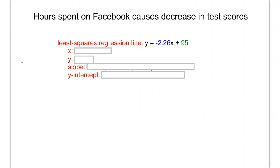Let's do one more example to ensure we understand the equation. Imagine hours spent on Facebook causes a decrease in test scores. You start with the possibility of getting a 95 if you spent no time on Facebook. Then the more time you spend on Facebook, you continually lose more points.